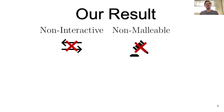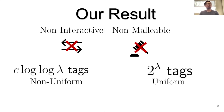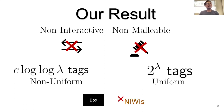This is precisely our result. We give a non-interactive non-malleable commitment tag amplification procedure that amplifies from O(log log λ) many tags — secure against non-uniform adversaries — to 2^λ many tags — secure against uniform adversaries. There is a caveat that we go from non-uniform to uniform adversaries, which I'll discuss later. The positive contribution is black-box use of cryptography and elimination of NIWIs.